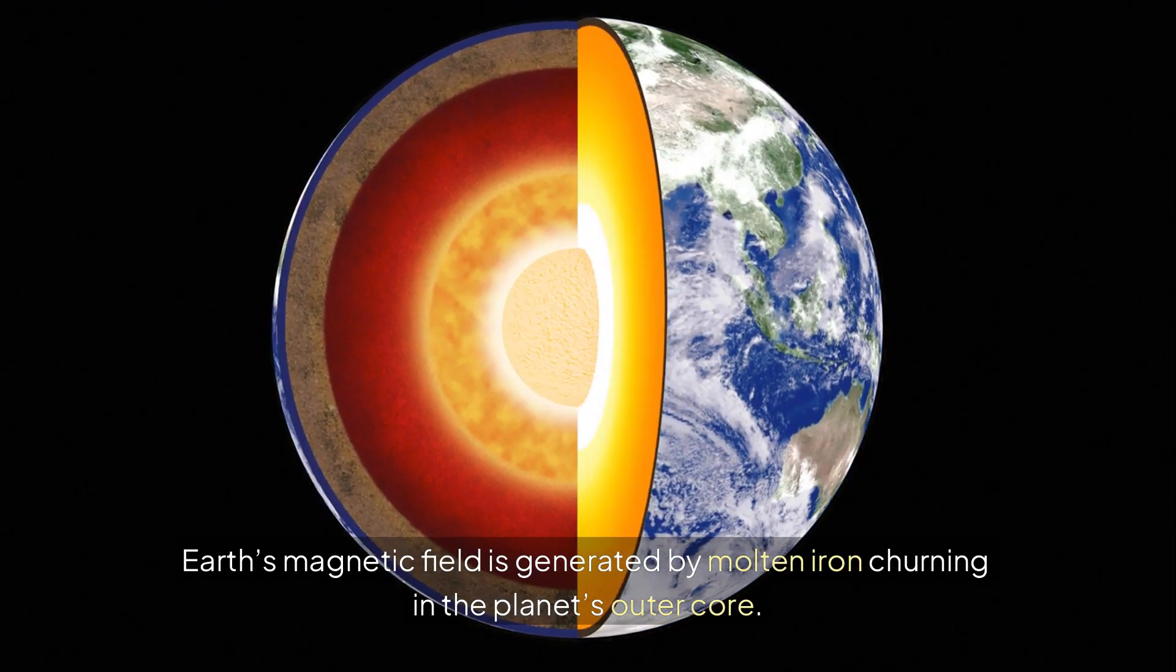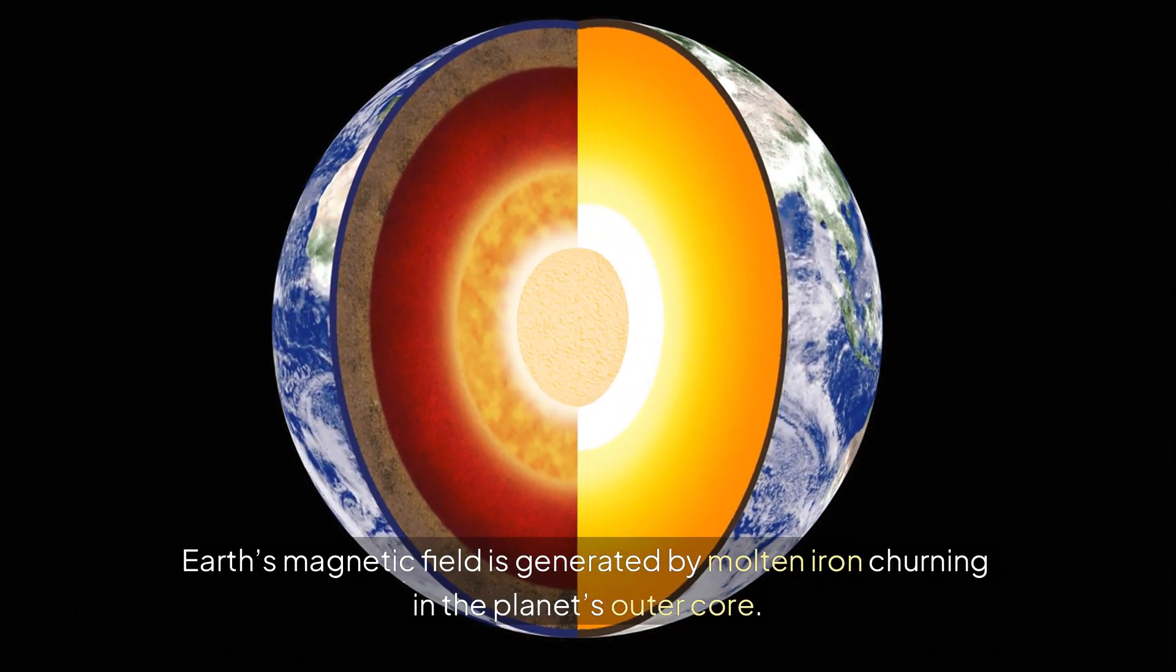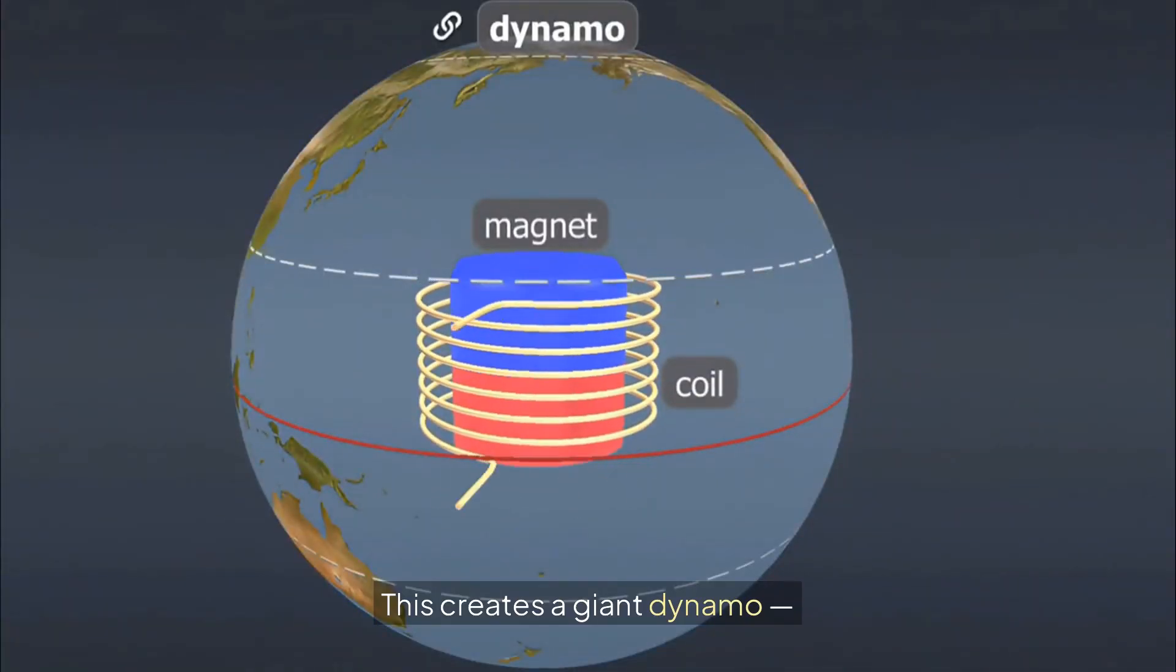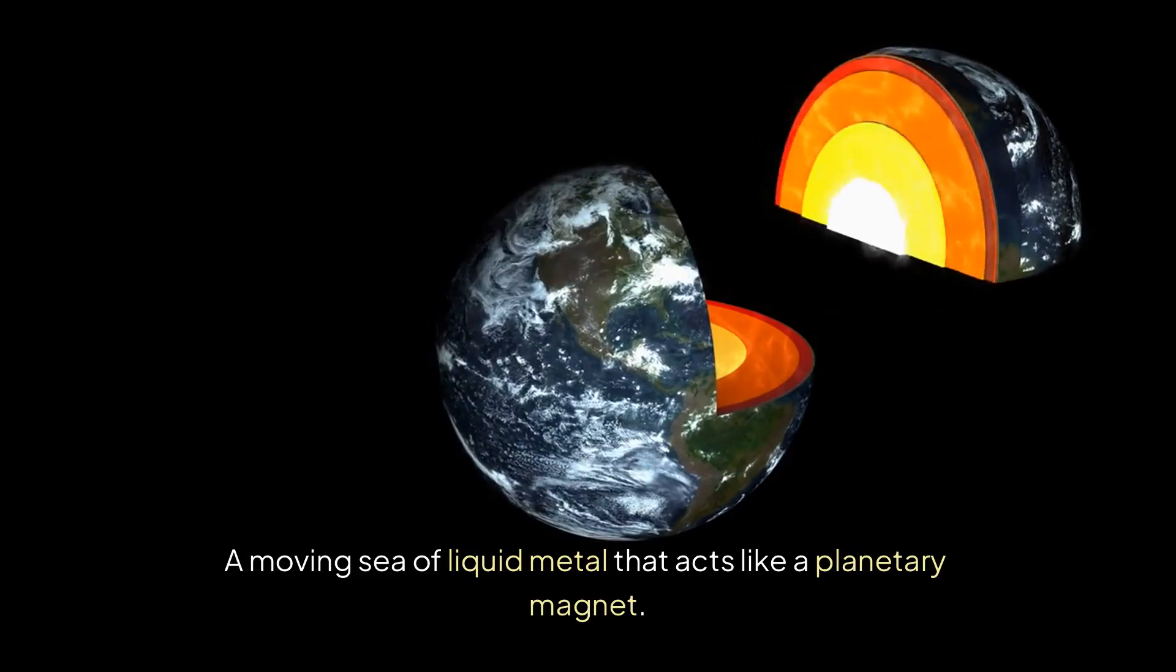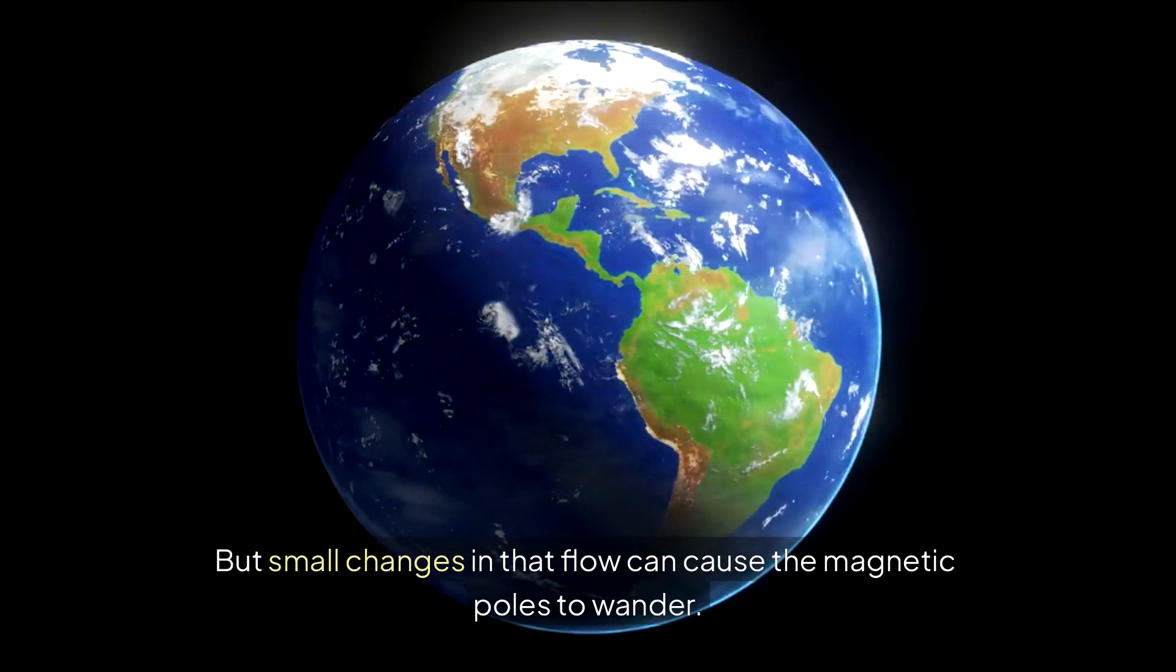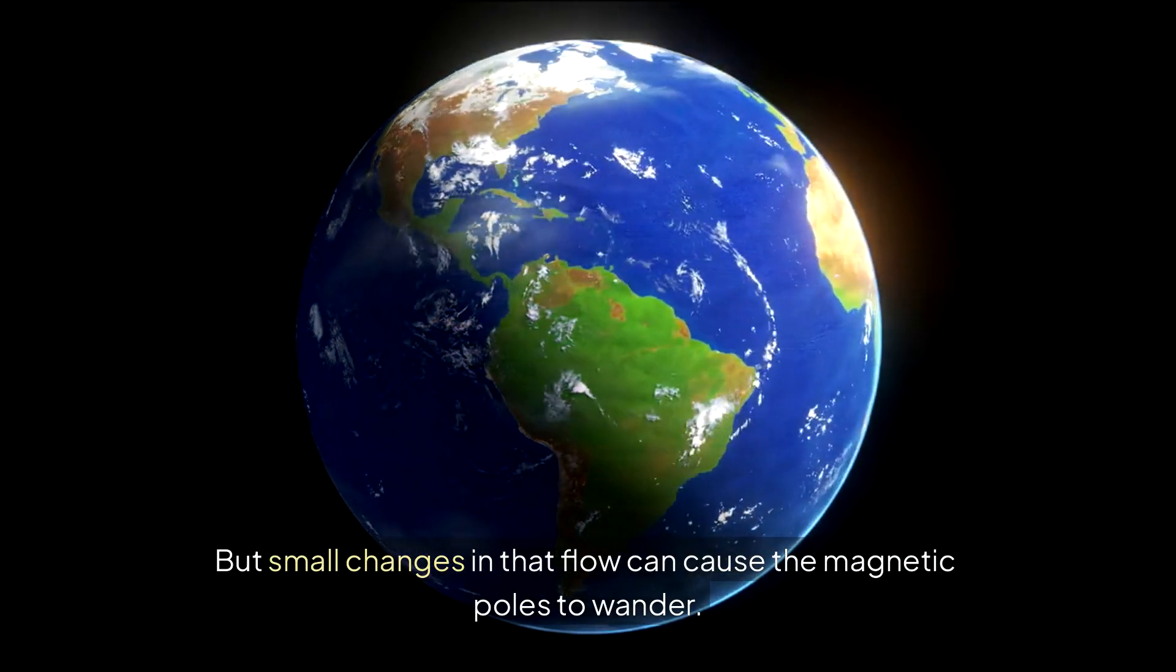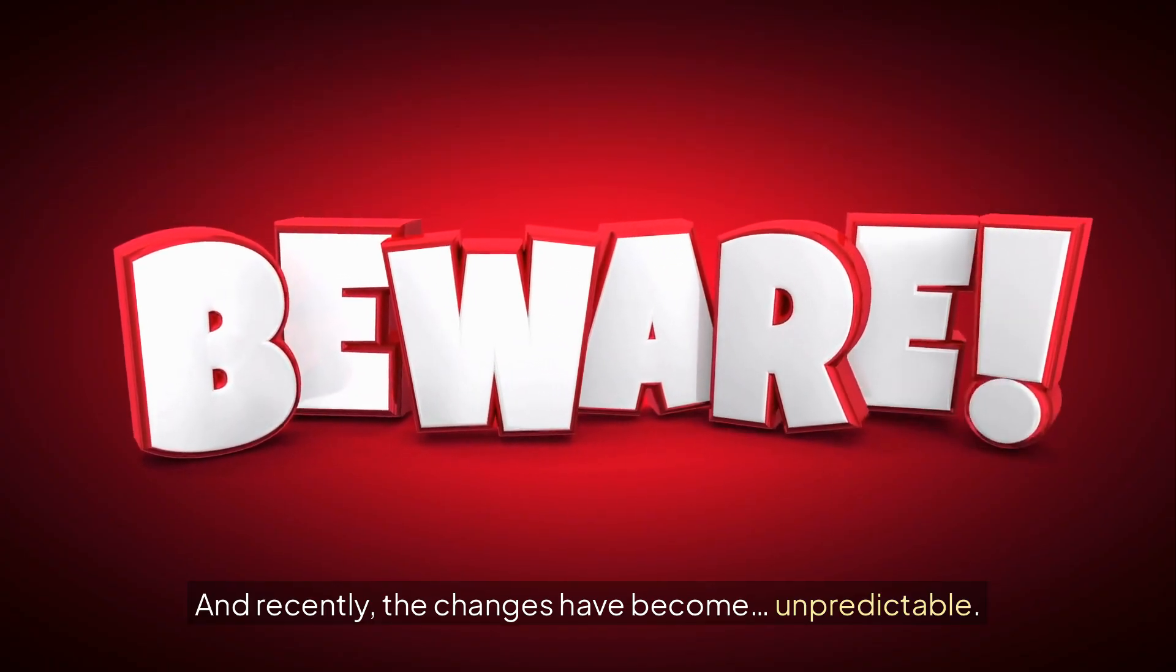That's where things get weird. Earth's magnetic field is generated by molten iron churning in the planet's outer core. This creates a giant dynamo, a moving sea of liquid metal that acts like a planetary magnet. But small changes in that flow can cause the magnetic poles to wander. And recently, the changes have become unpredictable.